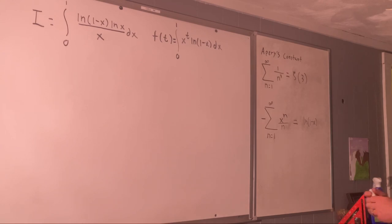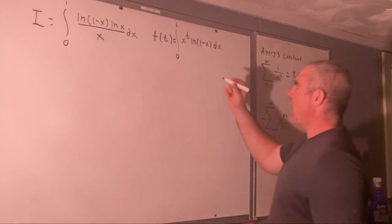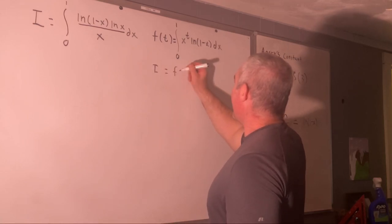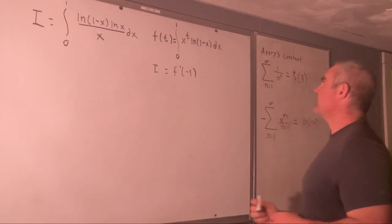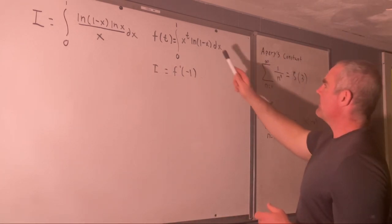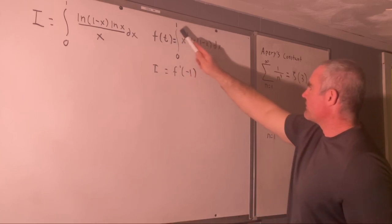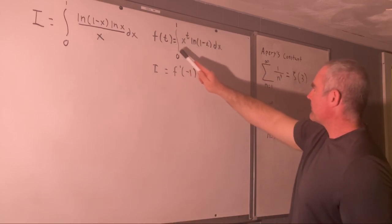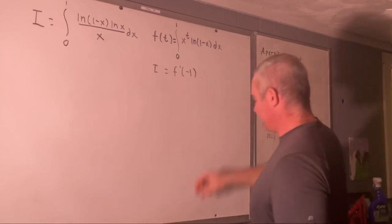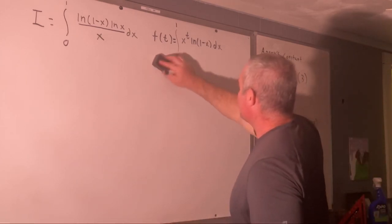So if that's our F of T, we can say that I is equal to F prime at negative one. I hope you can see that.